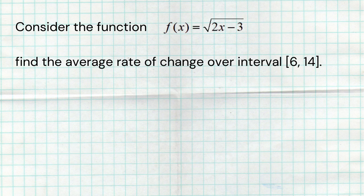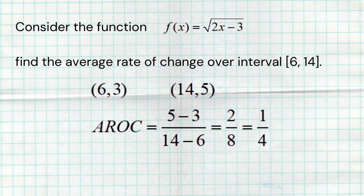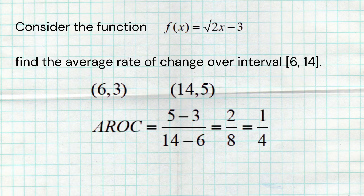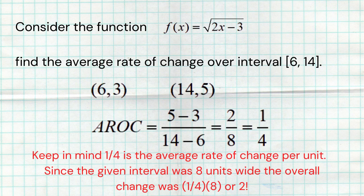For the function √(2x - 3), find the average rate of change over the interval [6, 14]. Plug in 6 to get 3, plug in 14 to get 5. Then (5 - 3) / (14 - 6) = 2/8 = 1/4. Make sure you're subtracting correctly, keeping the y's on top, and maintaining the same order: outputs on top, inputs on bottom, in the same direction.